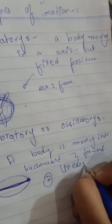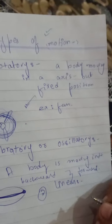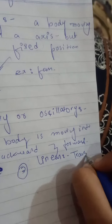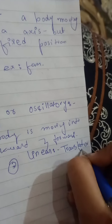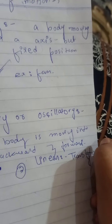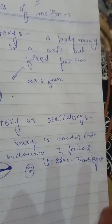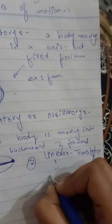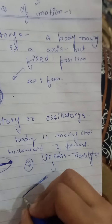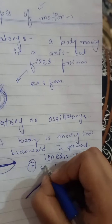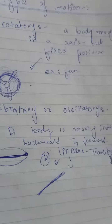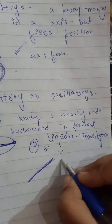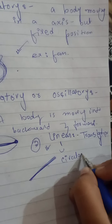The third type is linear motion, also called translatory motion. Translatory motion means a body is moving in a straight line. Linear means in a straight line, and a body moving in a straight line is called linear or translatory motion.